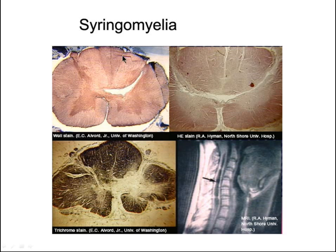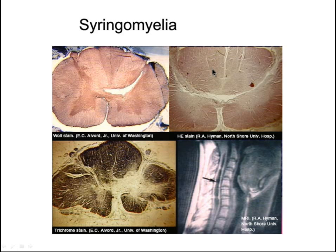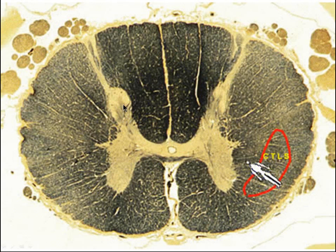Mythologically, there was a nymph named Syrinx who was being pursued by the god Pan. She ran into the river and was turned into a hollow reed. When the wind would blow, music would come out of that reed. Pan then cut her up and made her into his pipes. So that's a syrinx.